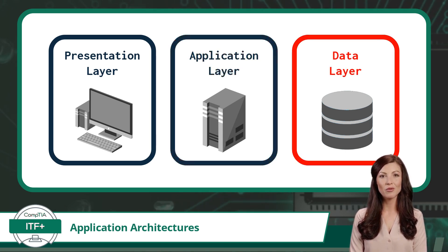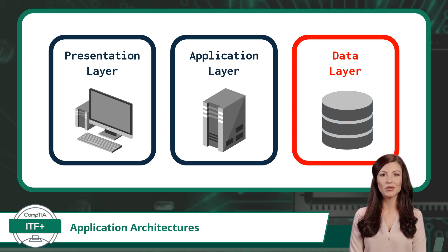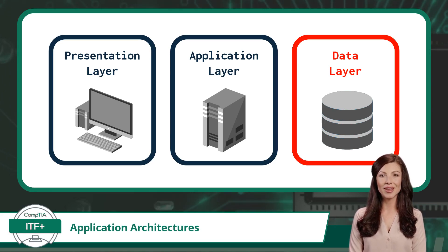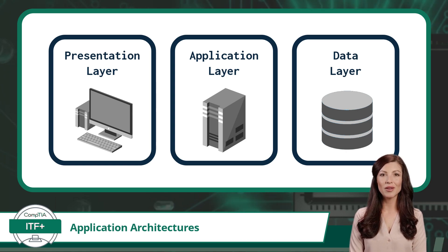The Data Layer, usually referred to as the back-end or data access layer, is responsible for storing, retrieving, and managing the application's data. It deals with databases or other data storage mechanisms where information is persistently stored. When the application requires data, the data layer retrieves and sends it to the application layer for processing. Similarly, when data needs to be saved or updated, the data layer handles the storage process. In the next video, we will see how these application architecture layers are deployed within varying architecture models.